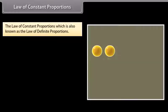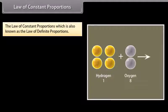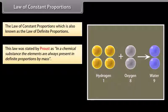The law of constant proportions, which is also known as the law of definite proportions, was stated by Proust. In a chemical substance, the elements are always present in definite proportions by mass.